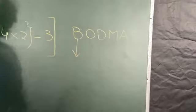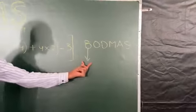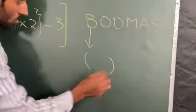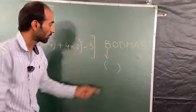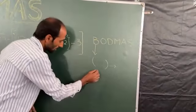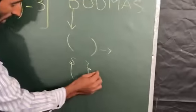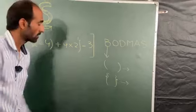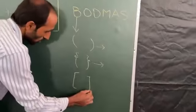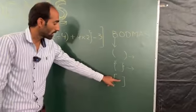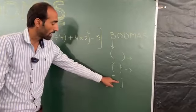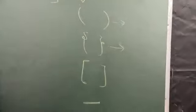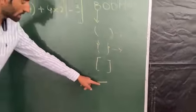There are four types of brackets. Number one is the short bracket, or we can say these are parentheses. Number two is curly brackets, or we treat them as middle brackets. Number three is square brackets, also known as long brackets. Number four is the vinculum, or we say it as bar.